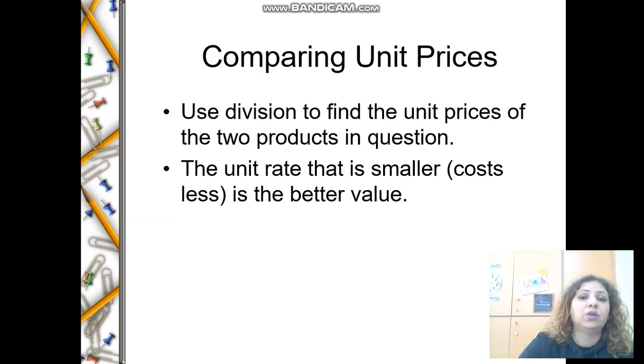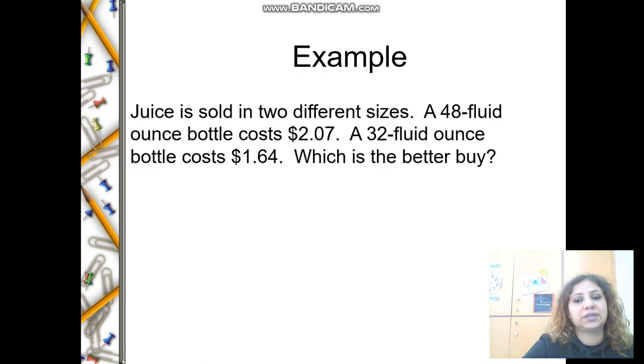Comparing unit prices: use division to find the unit prices of two products. Then you can compare and see which one is less and which one is more. Juice is sold in two different sizes. A 48 fluid ounce bottle costs $2.07, and a 32 fluid ounce bottle costs $1.64. Which is the better buy?